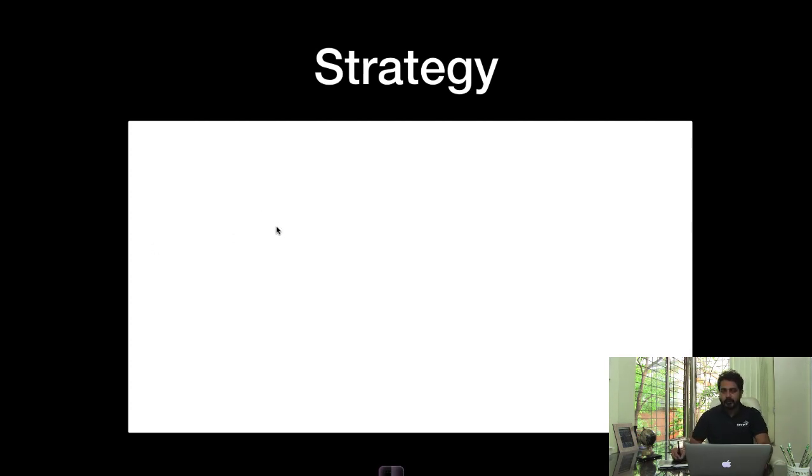Before your actual Level 1 classroom sessions begin, we start with a program called Level 0. It's an in-house program developed by us. The idea with Level 0 is that a lot of people who come to us for training are not from a finance background, or they are from finance background but studying after a long gap. You can think of Level 0 as a boot camp program — we assume people have no idea about finance and start with all the basics, like how to use a financial calculator, what derivatives are, what equity markets are, and a little bit of linear algebra. So no matter what your background is, after Level 0 you should be at a level playing field with the rest of the class.